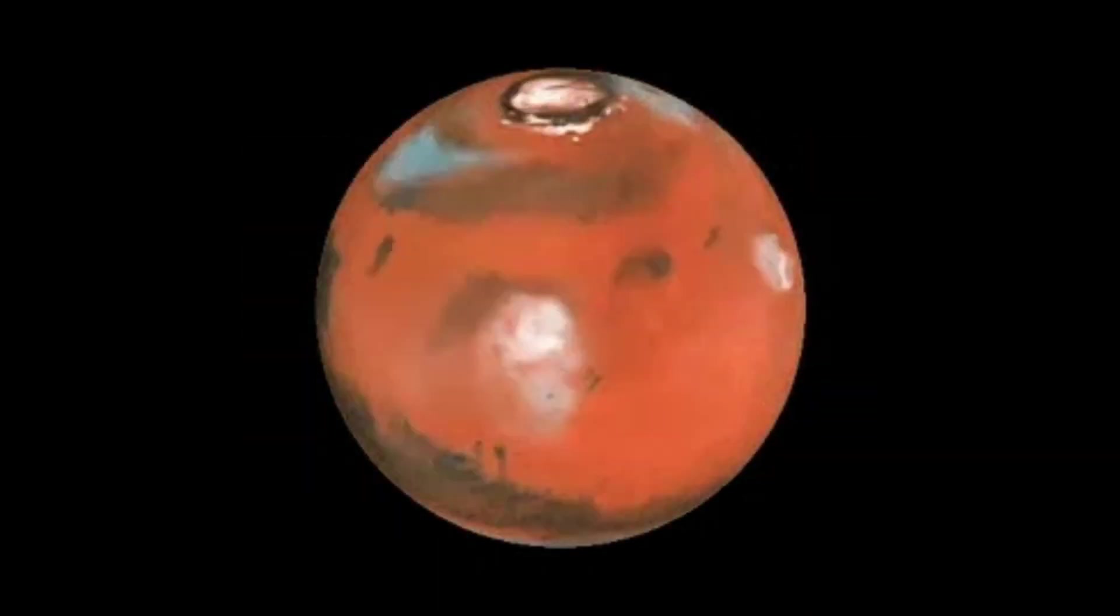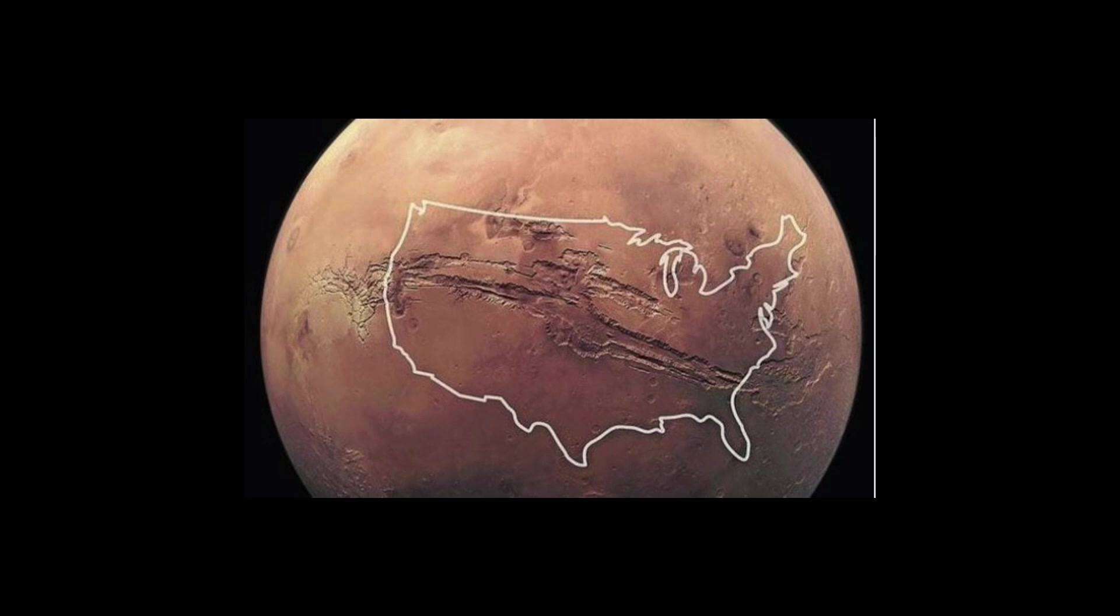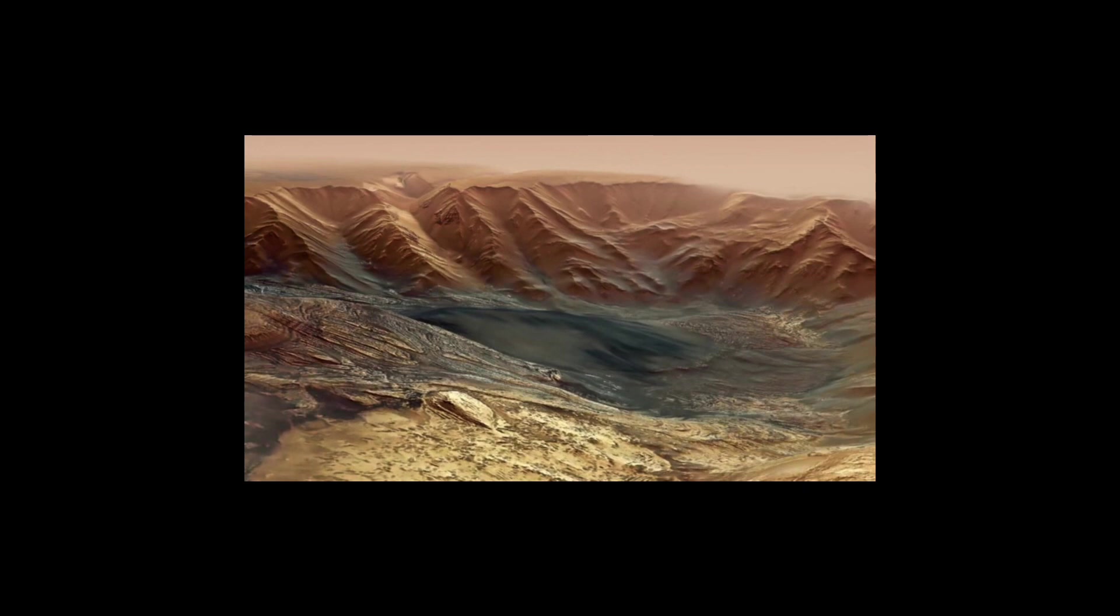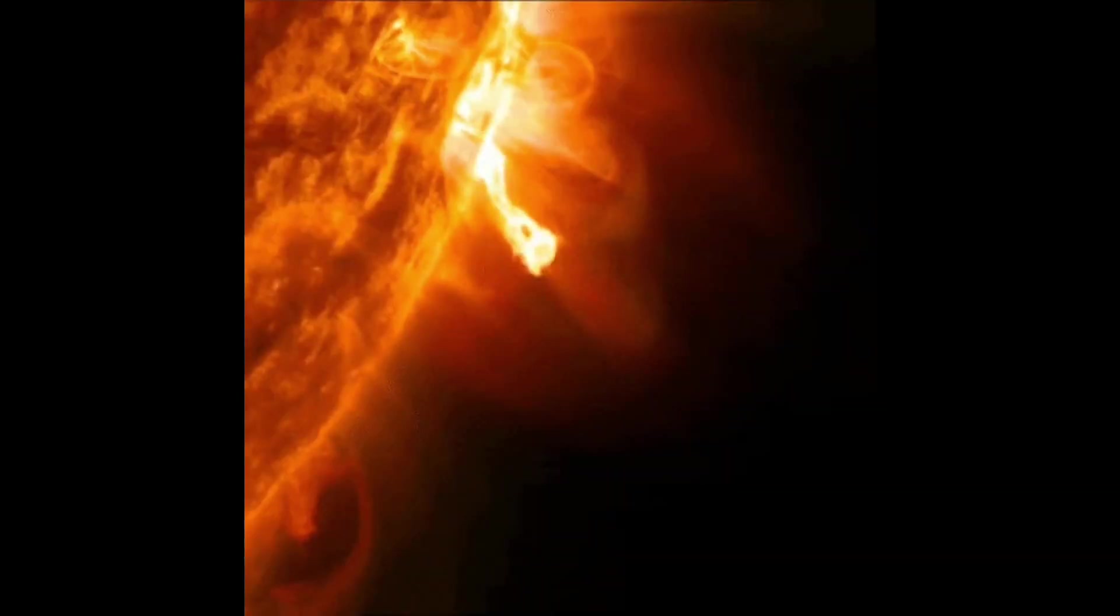Located on Mars, Valles Marineris is the biggest canyon in our solar system. It is 2,485 miles long, 124 miles wide, and 6 miles deep. In our star's core, it produces around the same energy as 15 billion thermonuclear bombs each second.